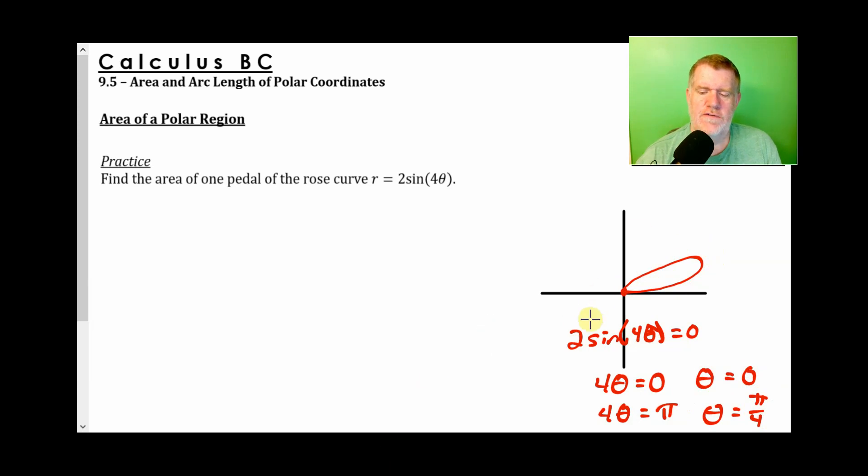So four theta would equal zero. In this case, theta would equal zero and theta would equal pi over four. So this goes from zero out to here by pi over four and it comes back. If you actually look at the graph, pi over four is the angle that kind of encloses that petal.